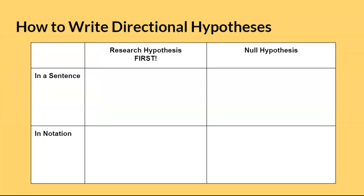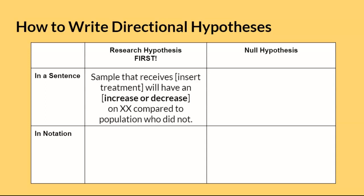Writing directional hypotheses are especially confusing to students. To make them easier, it is important that you write the research hypothesis first. Then the null hypothesis will be easier to write afterward. Recall that the research hypothesis is predicting that a difference will happen. In a directional hypothesis, we are predicting that we know in which direction this difference will happen. The research hypothesis would be written like this: insert treatment refers to writing in the specific treatment given as part of the study. Since we are predicting the direction, you will indicate either an increase or a decrease. XX refers to what we are studying. It is important that you clearly state that a sample is being compared with a population.